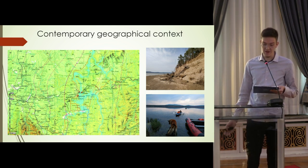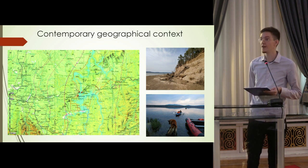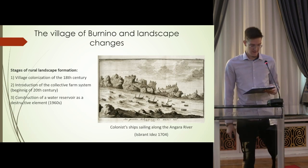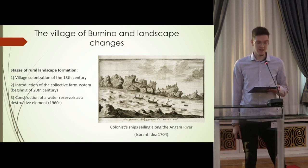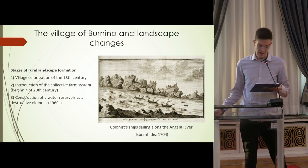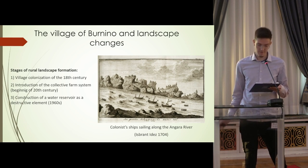It is the area near the city of Bratsk that I want to concentrate on today. An excellent example for studying landscape changes is the village of Burnino, since it was not completely submerged as it was located on a high terrace. Using this example, we can trace the formation of the rural landscape of Western Siberia taking into account local characteristics.